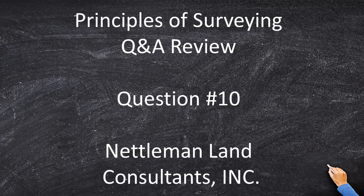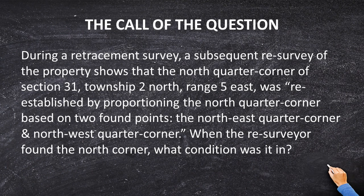Principles and practice question and answer review, question number 10. During a retracement survey — a subsequent resurvey of the property — a previous resurvey shows that the north quarter corner of section 31, township 2 north, range 5 east was re-established by proportioning the north quarter corner based on two found points: the northeast quarter corner and the northwest corner. When the resurveyor found the north corner, what condition was it in?